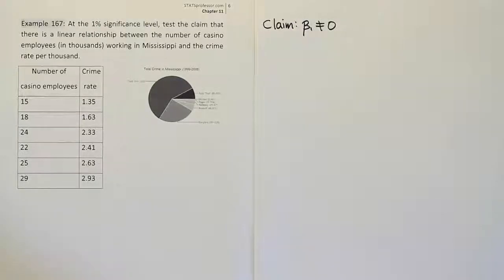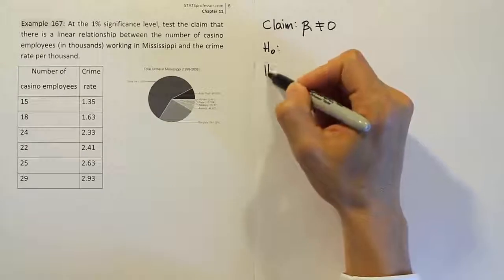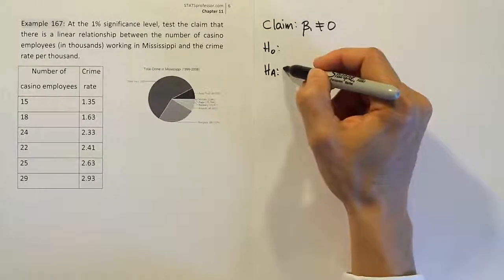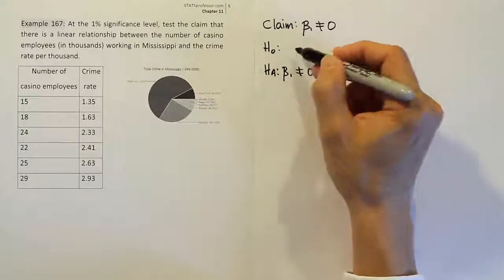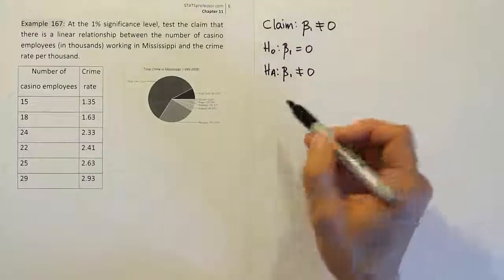So let's move on then and go into the next phase of the process. Next phase of the process is to express H₀ and Hₐ from the claim. The claim has a not equal to symbol, so that makes it Hₐ, so we're going to say not equal to zero. And H₀ will be the idea that it's equal to zero, the opposite of not equal to.